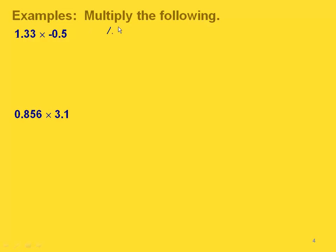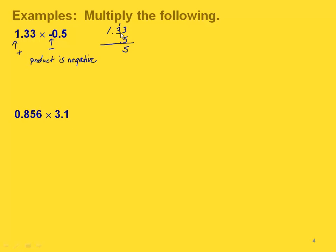Let's do some examples. If we have 1.33 times negative 5 tenths, notice with multiplication it doesn't matter that we line up the decimals. Since this is a negative and this is a positive number, our product is going to be negative. So we're going to multiply these just like whole numbers, taking the 5 times each of the three digits: 5 times 3 is 15, carry the 1; 5 times 3 is 15 again, plus 1 is 16, write down 6 and carry the 1; then 1 times 5 is 5, plus 1 is 6. So here's our initial product.